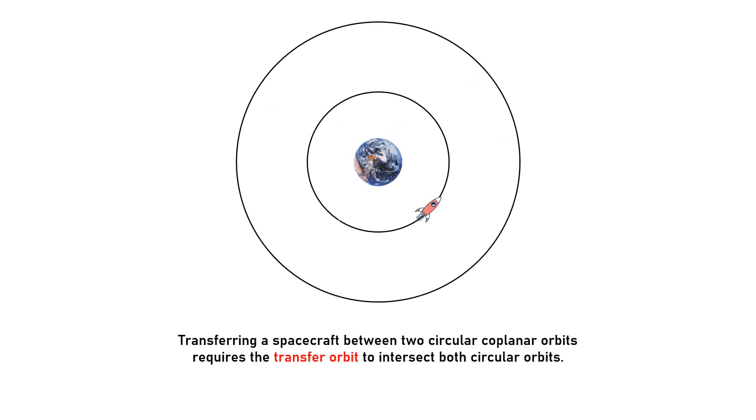Transfer between circular coplanar orbits only requires that the transfer orbit intersect both orbits. In the case of a Hohmann transfer, the transfer ellipse is tangent to both of the circular orbits at its perigee and apogee points.